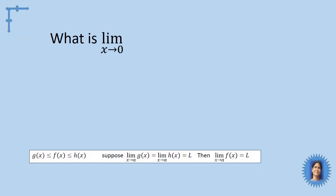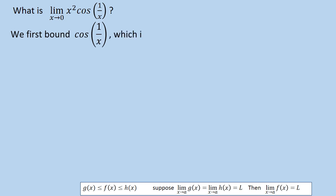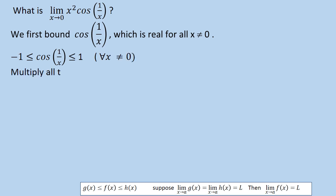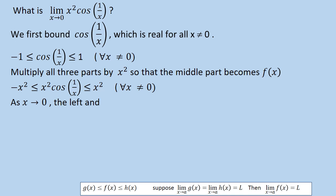Let us apply this theorem to the question: what is the limit as x tends to 0 of x² cos(1/x)? We have to put this function in between two other functions whose limits are equal. We first bound cos(1/x), which is real for all x ≠ 0. We know the value of cosine is always between -1 and 1, so: -1 ≤ cos(1/x) ≤ 1. Now we multiply all three parts by x², so the middle part becomes our function: -x² ≤ x² cos(1/x) ≤ x² for all x ≠ 0.